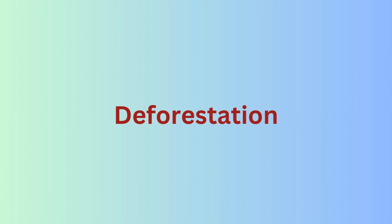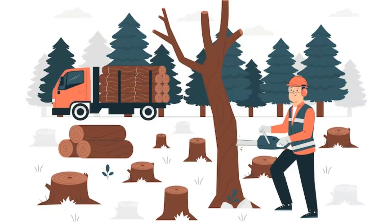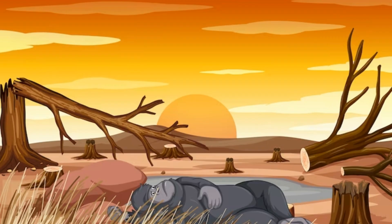Deforestation is another reason for environmental issues, caused by the depletion of trees and forests at an alarming rate. Trees are very important for us because they provide us with oxygen and several raw materials, and also maintain the temperature of the earth. However, due to the depletion of trees and forests by human beings for commercial purposes, there has been a drastic change in the earth's climate. We can conclude that the destruction of forests has led to the elimination of a large number of plant and animal species, affecting biodiversity.